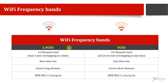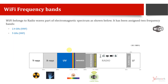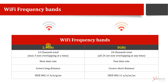Wi-Fi gives us two frequency bands on which we can operate — these are ISM bands. Wi-Fi belongs to the radio waves part of our electromagnetic spectrum. We have two bands: one is 2.4 GHz and the other is 5 GHz. The 2.4 GHz band is more stable but gives us a slower data rate compared to 5 GHz because the frequency is lower.